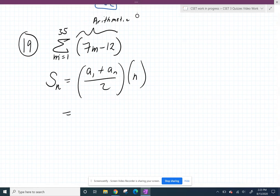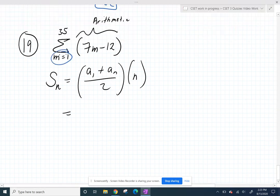We can always get our first term by plugging in whatever number they tell us to plug in first. So when we plug in that 1, 7 times 1 minus 12 is negative 5.